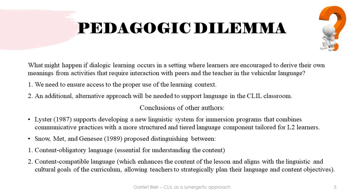Conclusions of other authors: Lister, 1987, supports developing a new linguistic system for immersion programs that combines communicative practices with a more structured and tiered language component tailored for L2 learners. Snow, Mett and Janacy, 1989, proposed distinguishing between content-obligatory language – essential for understanding the content – and content-compatible language – language which enhances the content of the lesson and aligns with the linguistic and cultural goals of the curriculum – allowing teachers to strategically plan their language and content objectives.